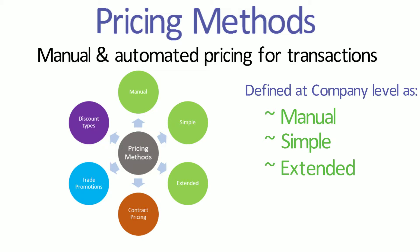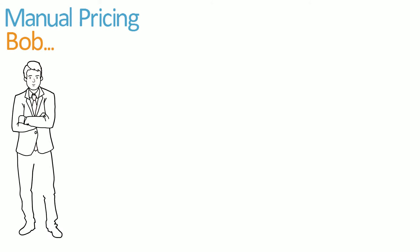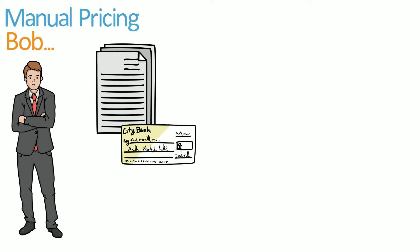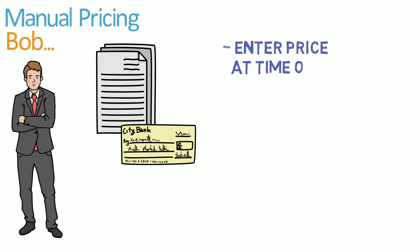Let's take a look at three examples. Manual pricing: Bob is a consultant and only offers services to his customers, and the price is determined per proposal. It is therefore easiest for him to enter the price of an item at the time of making the sale and then applying a discount if necessary. For someone like Bob, manual pricing suits his needs.